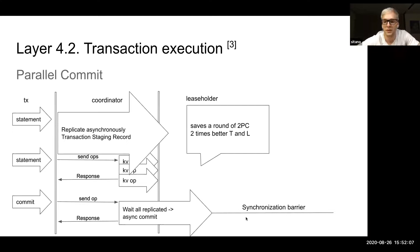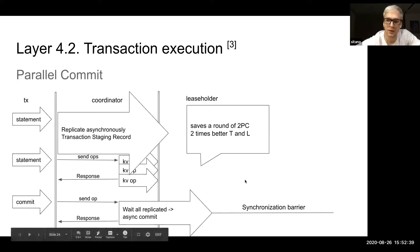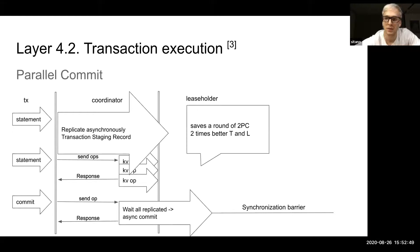Then it processes it and returns to the coordinator. At the coordinator, at this point, it serves as a synchronization barrier. When the commit was returned from the leaseholder, it means that all of its dependencies, all of the operations of the transaction were replicated. The only thing the coordinator needs is the notion of the replication of the transaction staging record, which to this point also must be replicated. If everything is replicated at this point, he can just answer to the user that the transaction has been committed and asynchronously send a commit statement to the leaseholder to mark the transactional staging record committed.